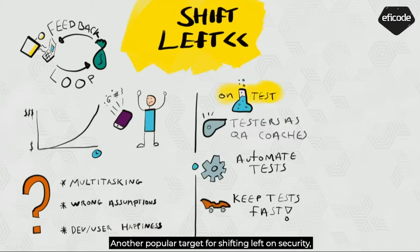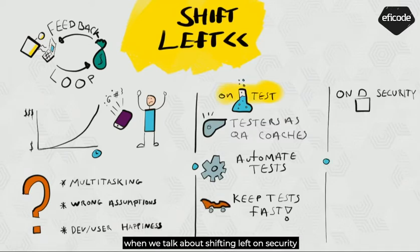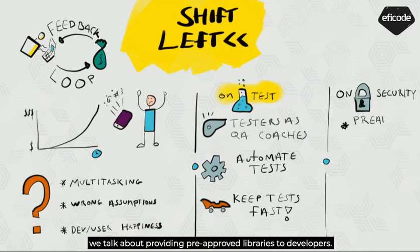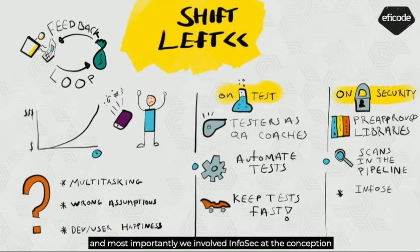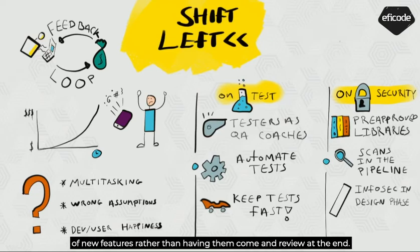Another popular target for shifting left is security. When we talk about shifting left on security, we talk about providing pre-approved libraries to developers, putting security scans into the pipelines, and most importantly, involving Infosec at the conception of new features rather than having them come and review at the end.